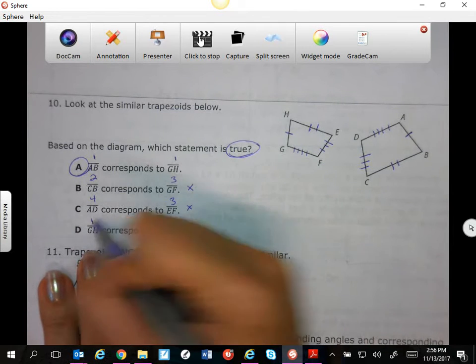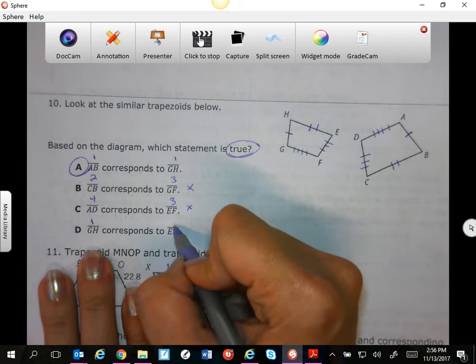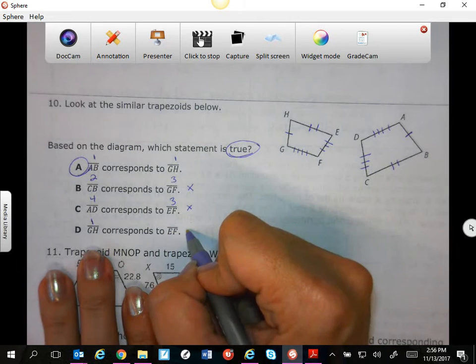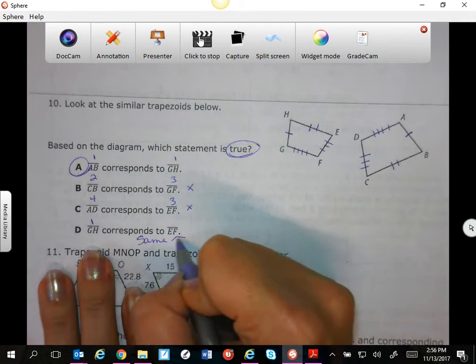GH is 1 and EF—well, those are on the same shape, so that doesn't even make sense. Can't be.